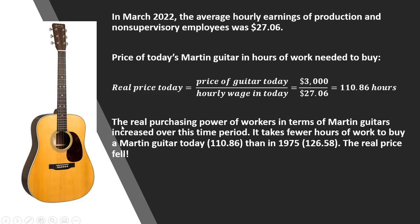Therefore, the real purchasing power of workers in terms of Martin guitars increased over this time period. It takes fewer hours of work to buy a Martin guitar today — roughly 111 hours — than in 1975, where it took almost 127 hours. The real price fell.